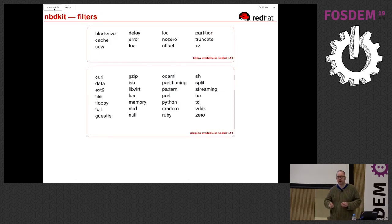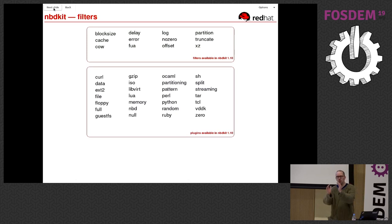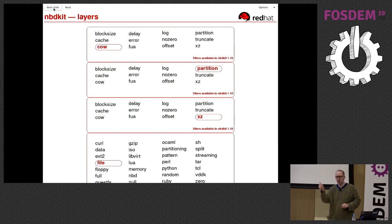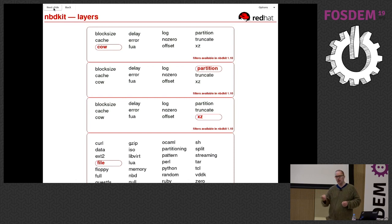The other concept that nbdkit has is filters. A plugin is like a data source — a source of disk images — while filters apply modifications or changes to that data source. For example, the partition filter: if your source is a whole partitioned disk image but you only want to serve one partition over NBD, you apply the partition filter. Each running nbdkit instance must have exactly one plugin, but zero or any number of filters. Here I've selected the file plugin as my source, applied the XZ filter to transparently uncompress it, the partition filter to select a partition, and the COW filter to make a writable overlay I can save to a QCOW2 file.